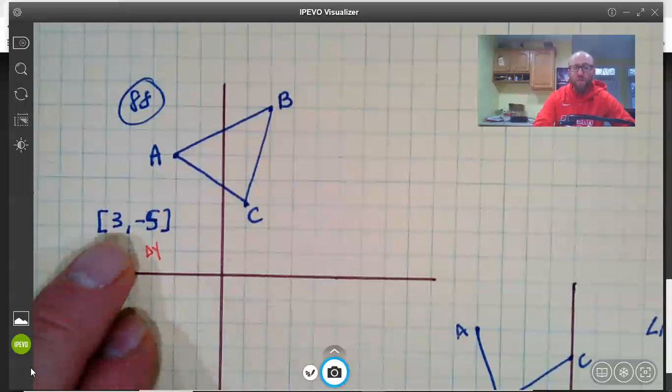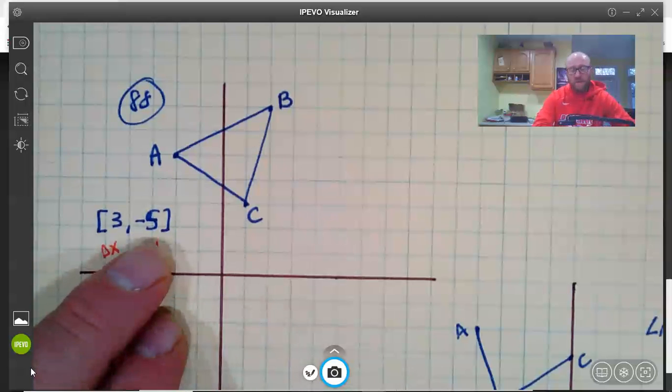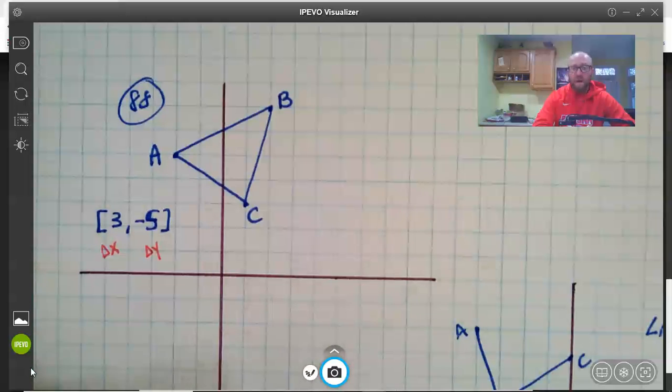So this triangle is going to move three spaces to the right, because it's positive. If it were negative we'd be going to the left. And this is going to be five spaces down, because it's negative and positive goes up.